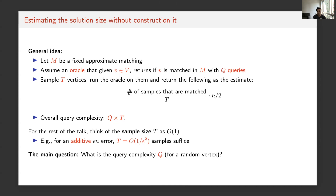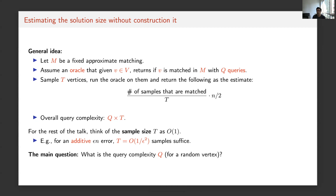The main question is: what is the query complexity Q for this matching M? Two points matter: first, it suffices to analyze Q for a random vertex rather than the worst-case vertex; and second, Q depends on how we fix the matching M. For some specific matchings Q could be large. The goal is to fix a matching for which we can efficiently determine whether any vertex is part of it.